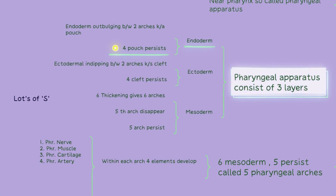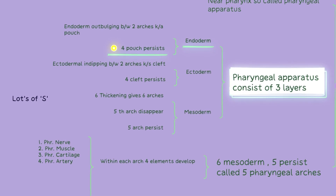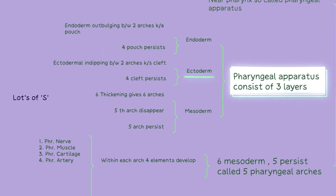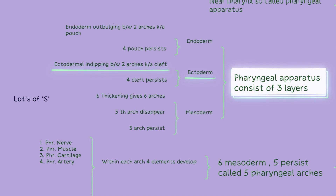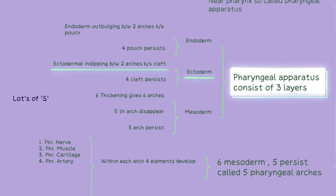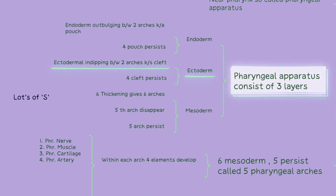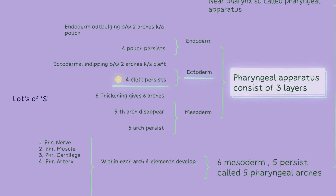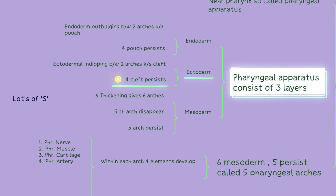It forms outpouchings or invaginations between the arches known as pharyngeal pouches. There are a total of four pharyngeal pouches that persist during development. The ectoderm is the outermost layer of the pharyngeal apparatus. It forms invaginations between the arches called pharyngeal clefts. Similar to the pouches, there are four pharyngeal clefts that persist during development.